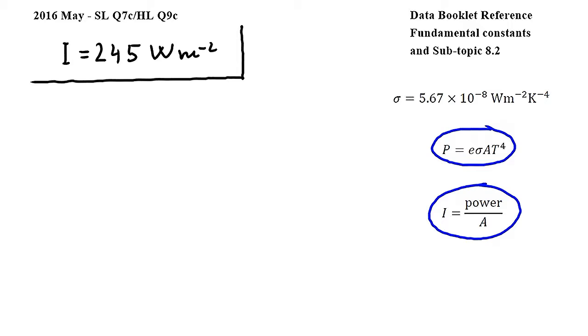Here, P is power, E is emissivity, sigma is the Stefan-Boltzmann constant, A is surface area, T is temperature, and I is intensity.